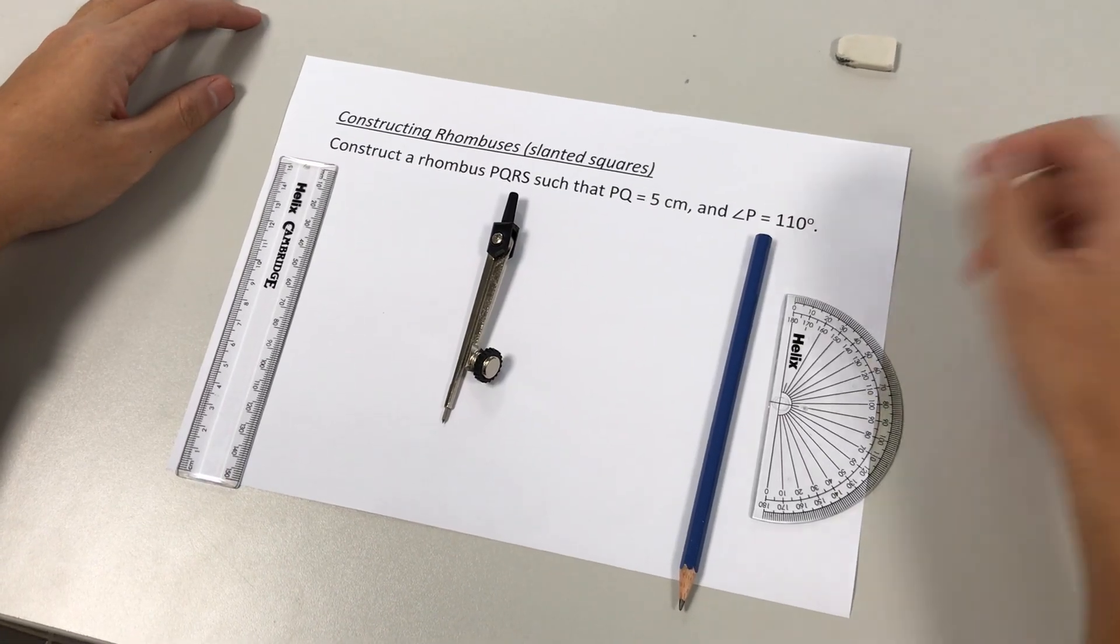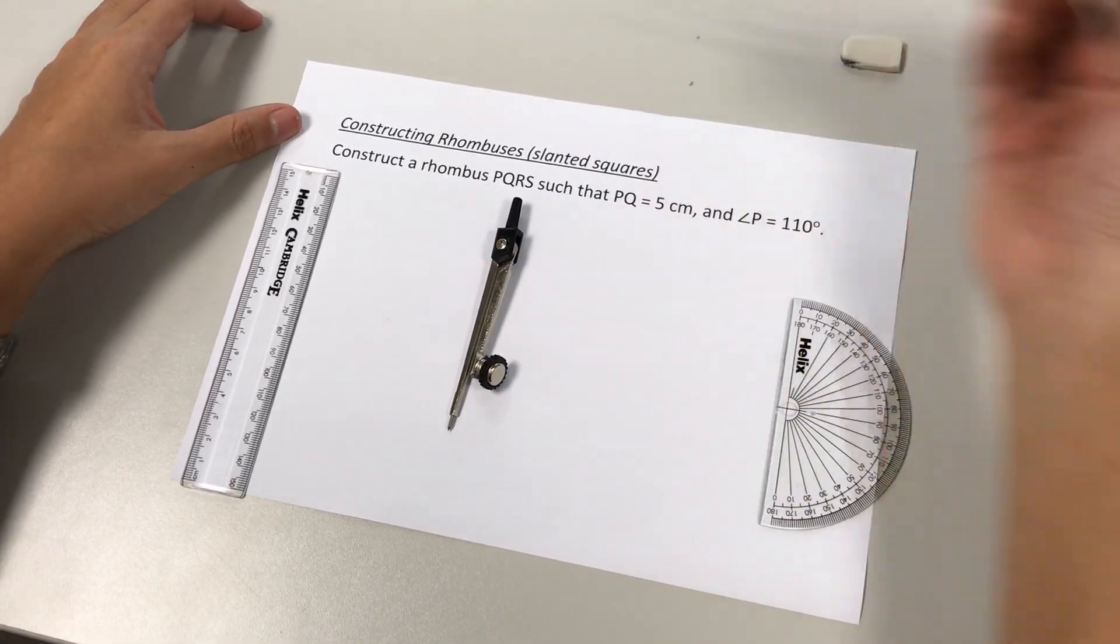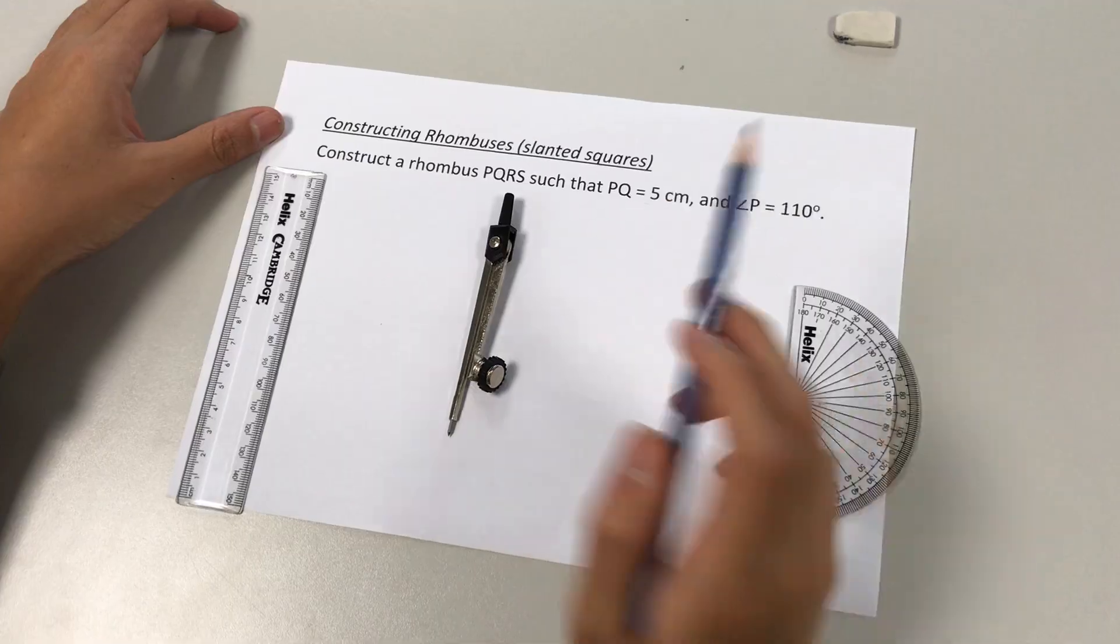All right, welcome back. Today we're going to learn how to draw a rhombus. A rhombus is a four-sided figure with four sides equal.